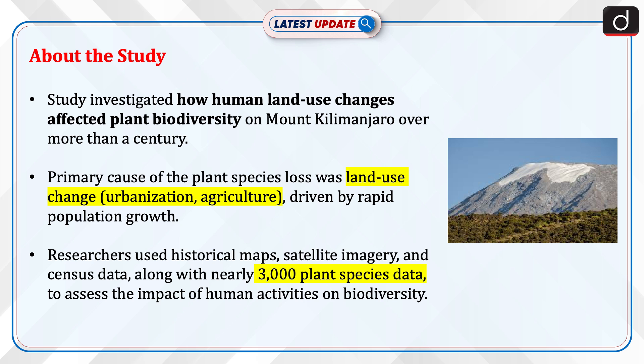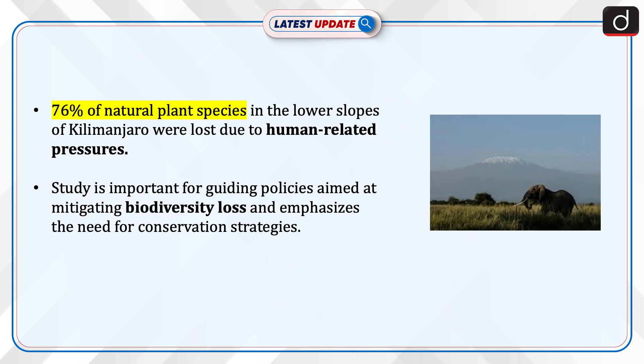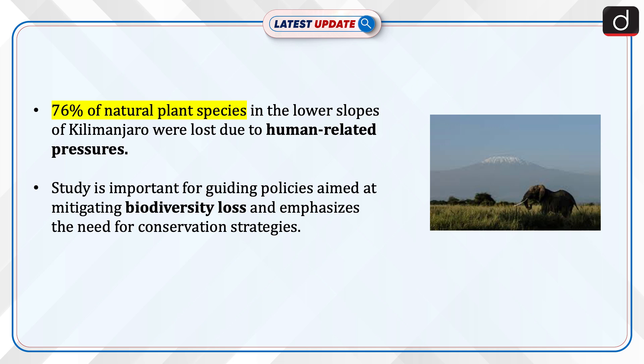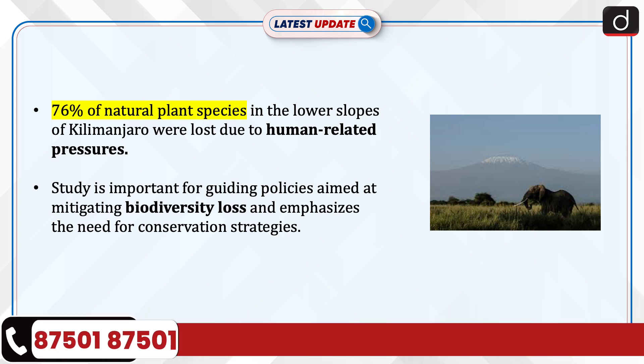The researchers used historical maps, satellite imagery, and census data along with nearly 3,000 plant species data to assess the impact of human activities on biodiversity. 76% of natural plant species in the lower slopes of Kilimanjaro were lost due to human-related pressures. The study is important for guiding policies aimed at mitigating biodiversity loss and emphasizes the need for conservation strategies.